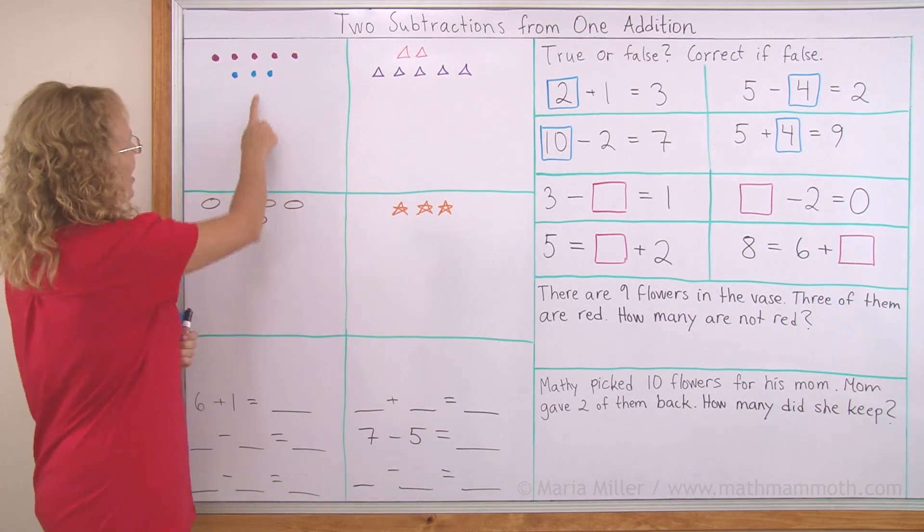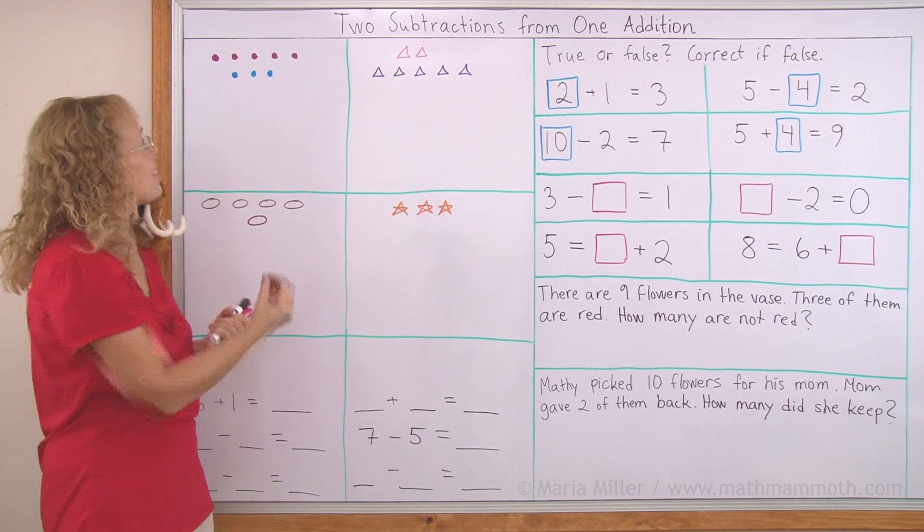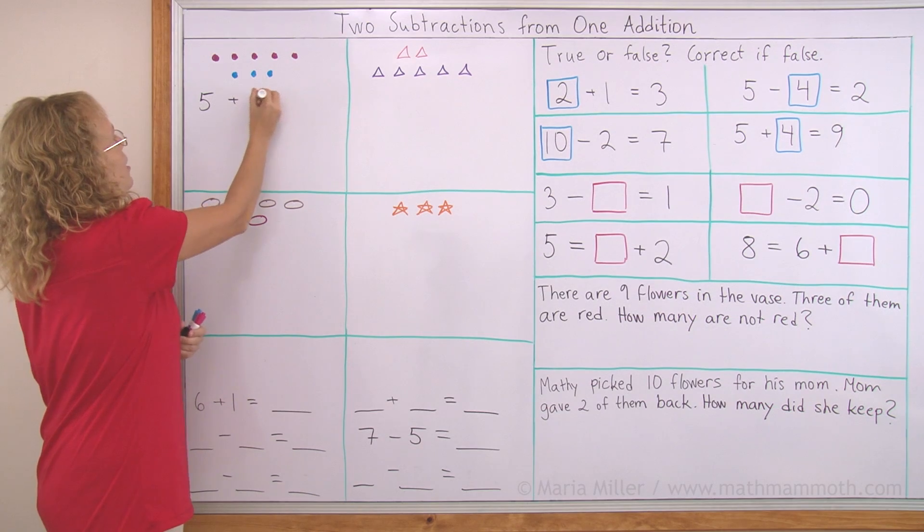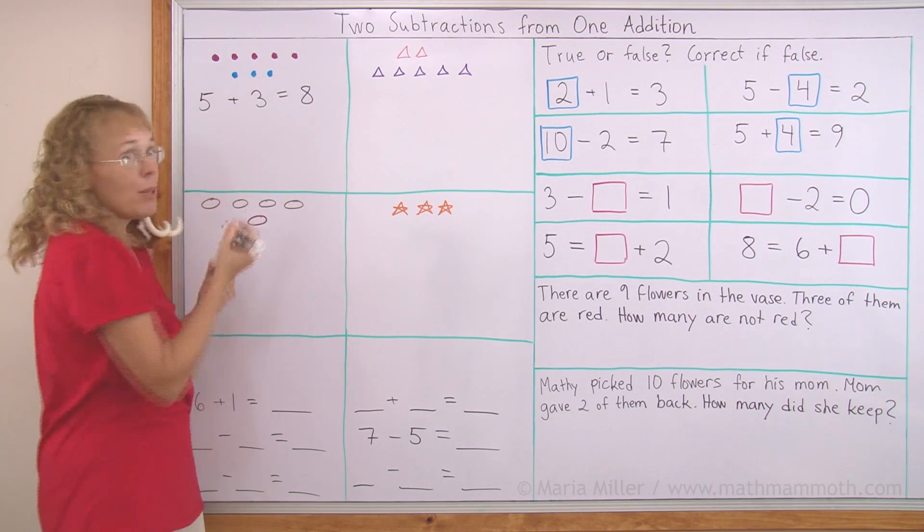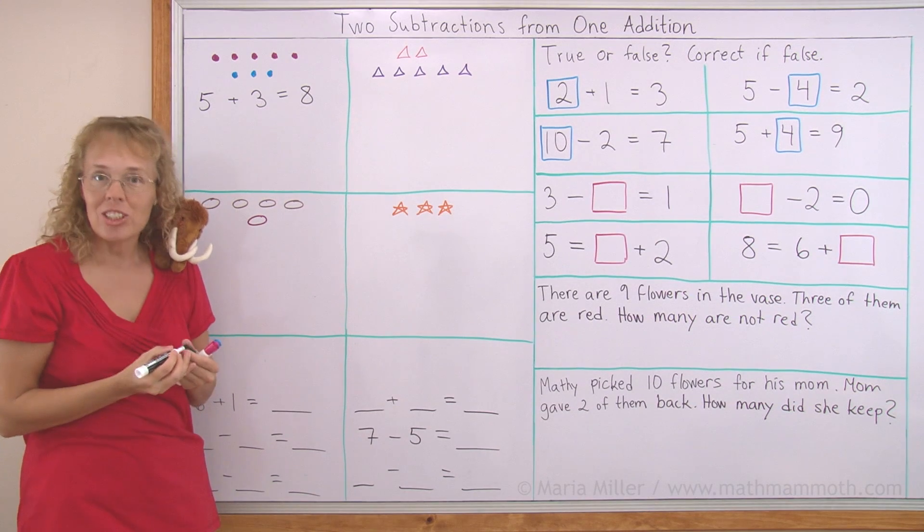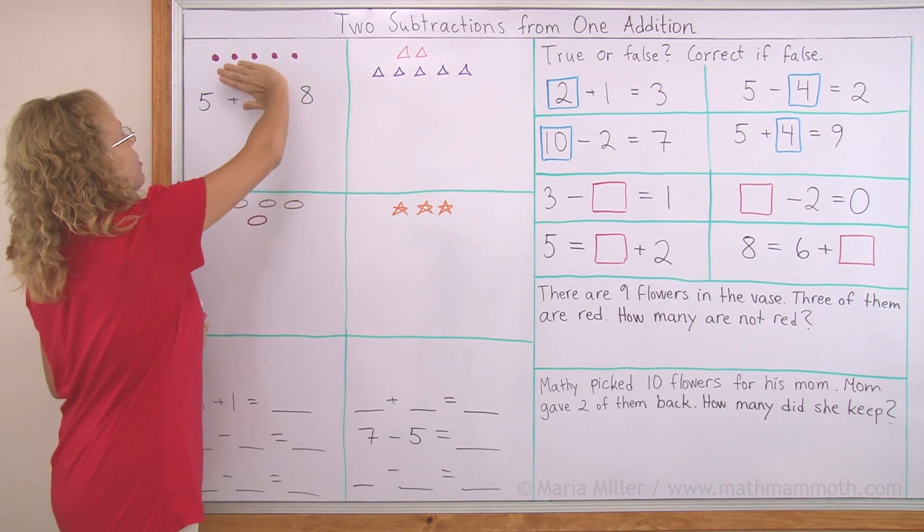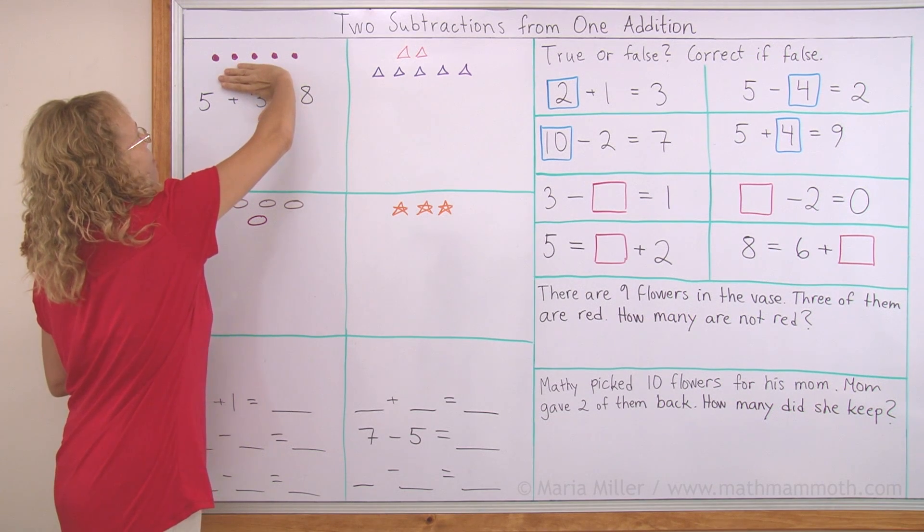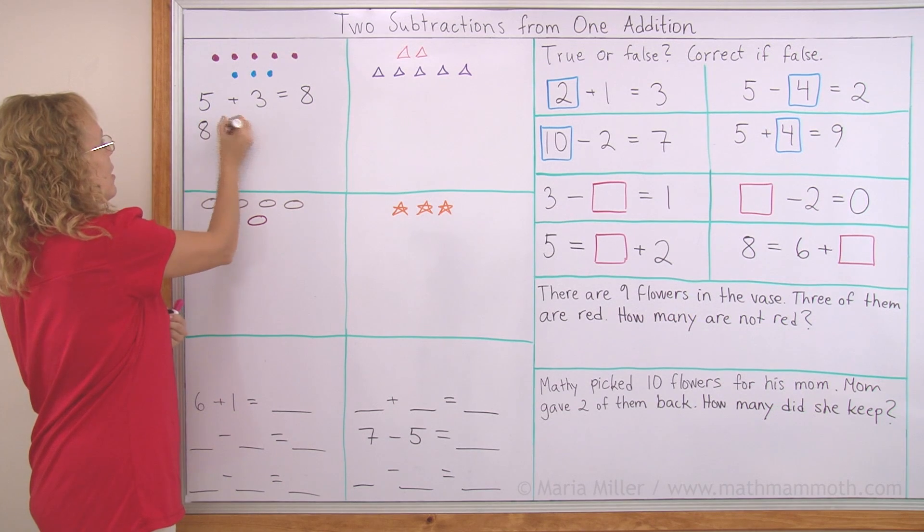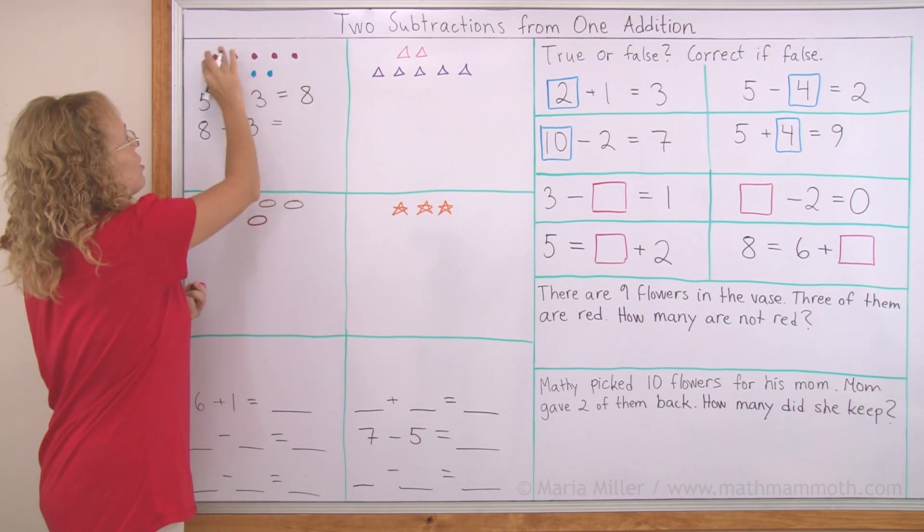For example, here I have blueberries and raspberries, so I can add them together. I have five raspberries here and three blueberries, so I can add. I get eight berries in total. But from this picture I can write two different subtraction sentences. The first one is, let's say those blueberries would go away or somebody eats them. Then we can write a subtraction. There was eight in the beginning and three of them got eaten. And then there's five left.